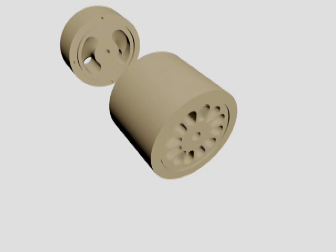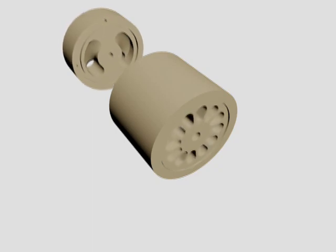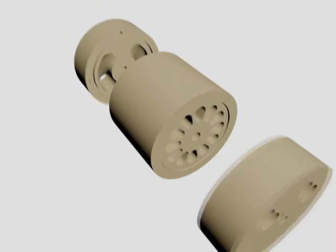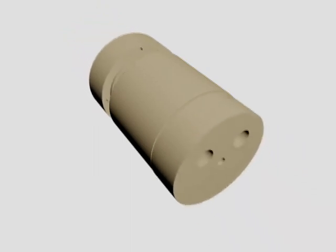Surrounding the rotor are a sleeve and two end covers. These ceramic components fit snugly around the rotor, forming a tight seal that prevents pressure from escaping.